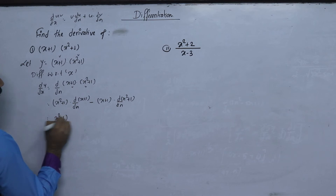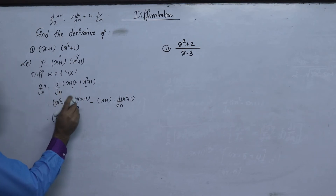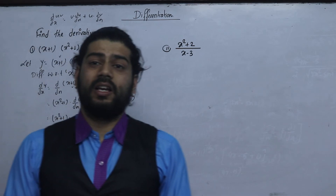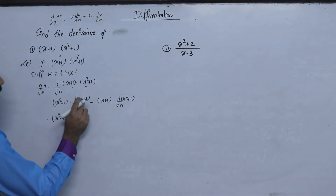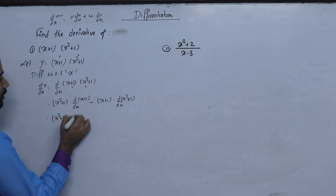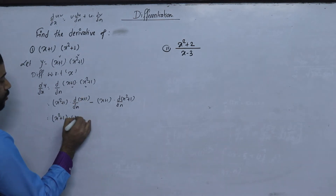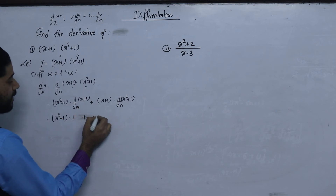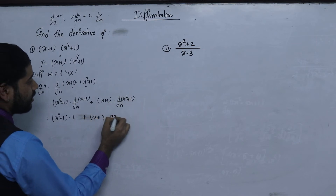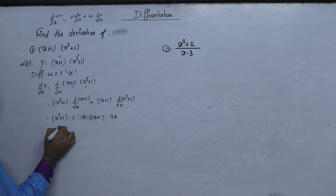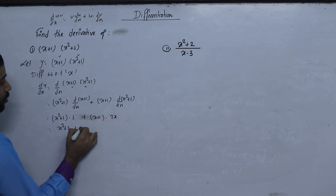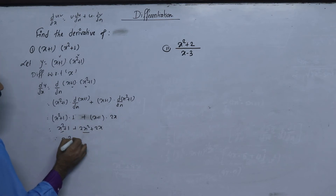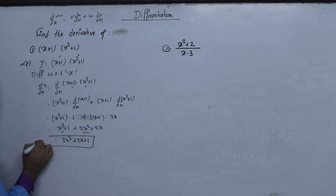We will solve x squared plus 1. We have x plus 1, and the derivative of x squared plus 1 gives 2x, with 1 over 0 being zero, so we get x squared plus 1 plus 2x into x, giving 2x squared plus 2x. So x squared plus 2x squared is 3x squared plus 2x plus 1 — that is the differentiation.